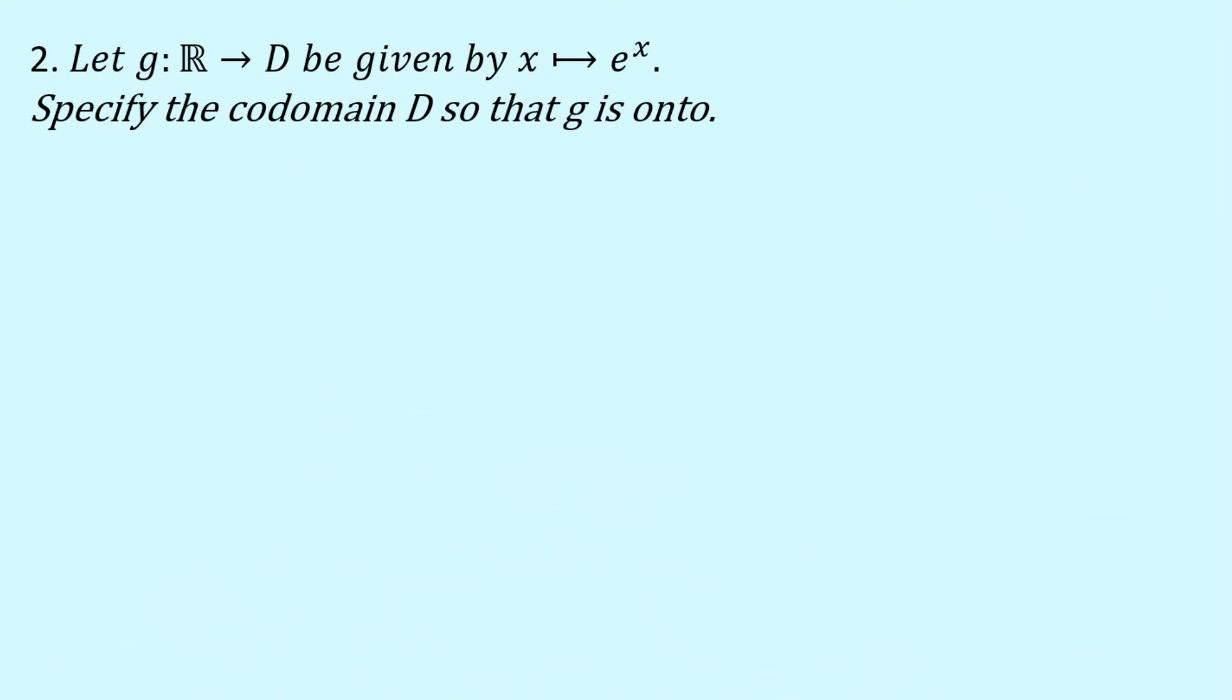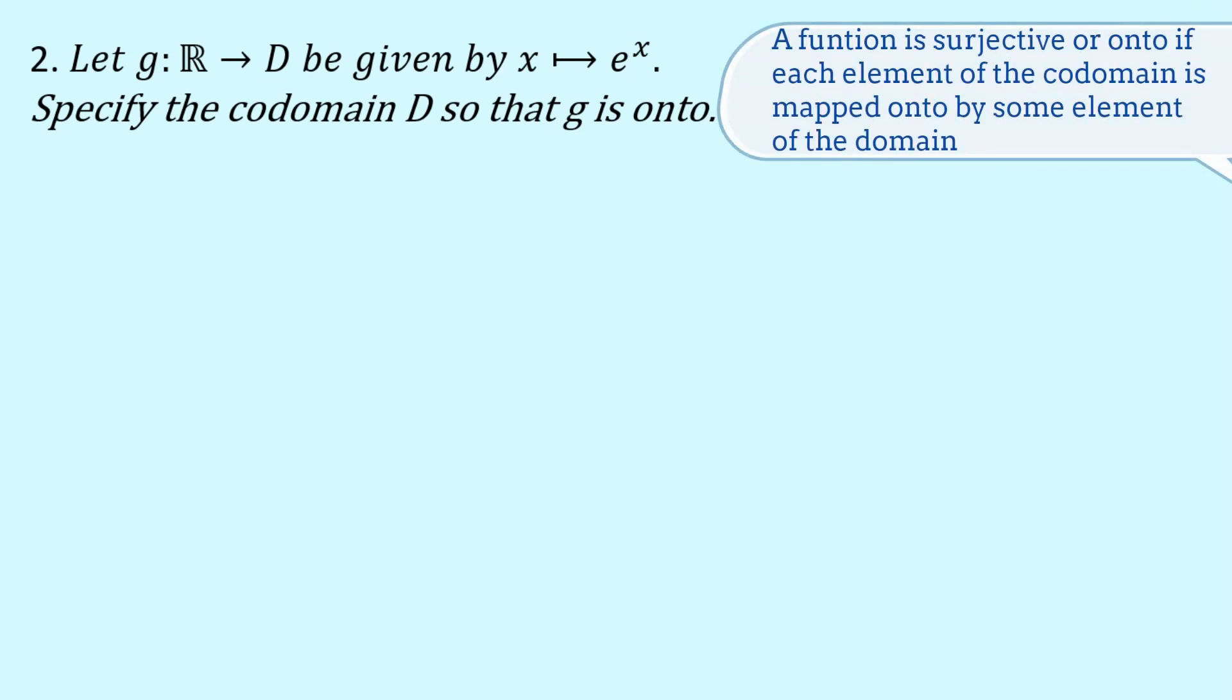And we want to specify the co-domain d so that g is onto. So let's just get the definition back up of a function being onto or surjective.